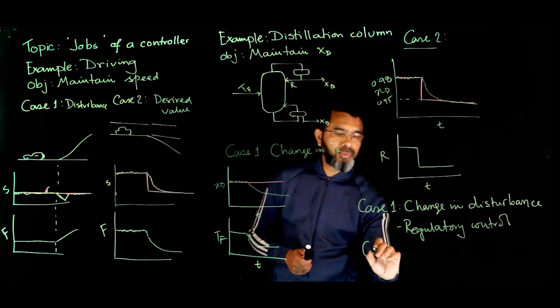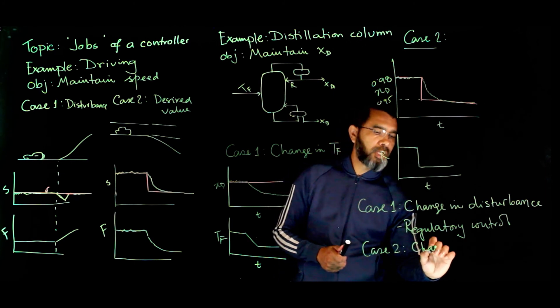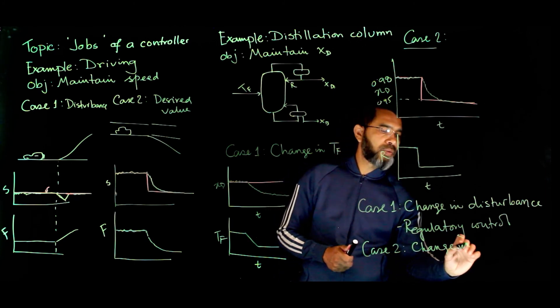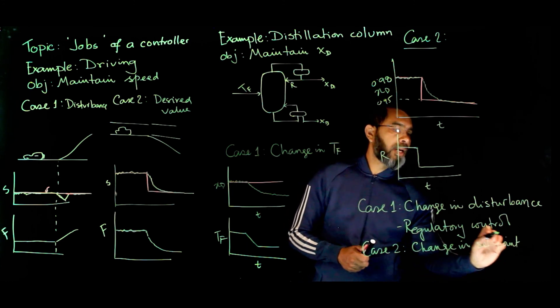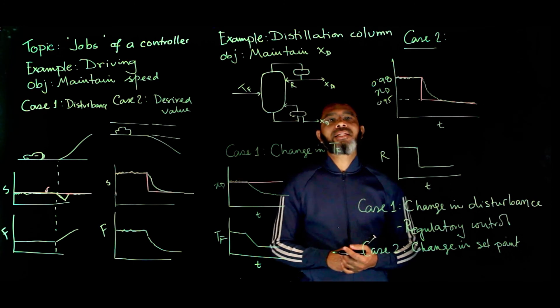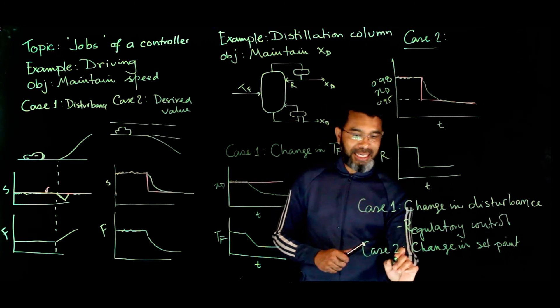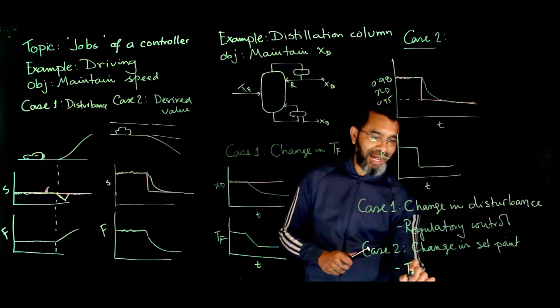For Case 2, you have a change in set point. The controller has to maintain that output at the new desired value, at the new set point. This is what is called tracking control.